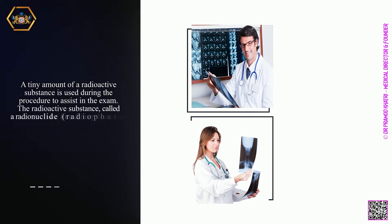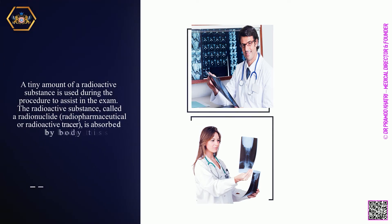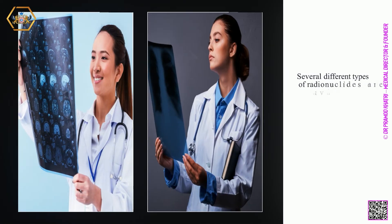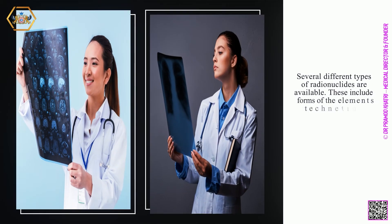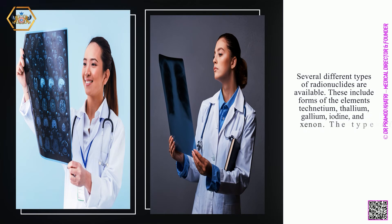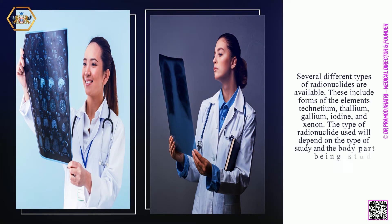The radioactive substance, called a radionuclide, radiopharmaceutical, or radioactive tracer, is absorbed by body tissue. Several different types of radionuclides are available. These include forms of the elements technetium, thallium, gallium, iodine, and xenon. The type of radionuclide used will depend on the type of study and the body part being studied.